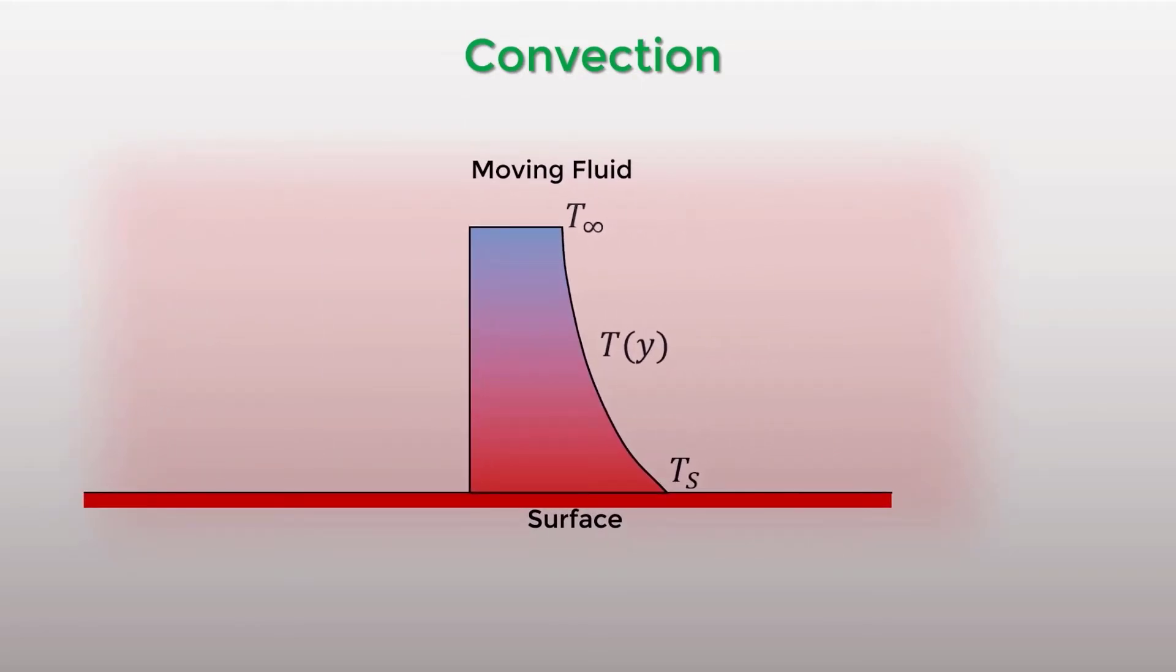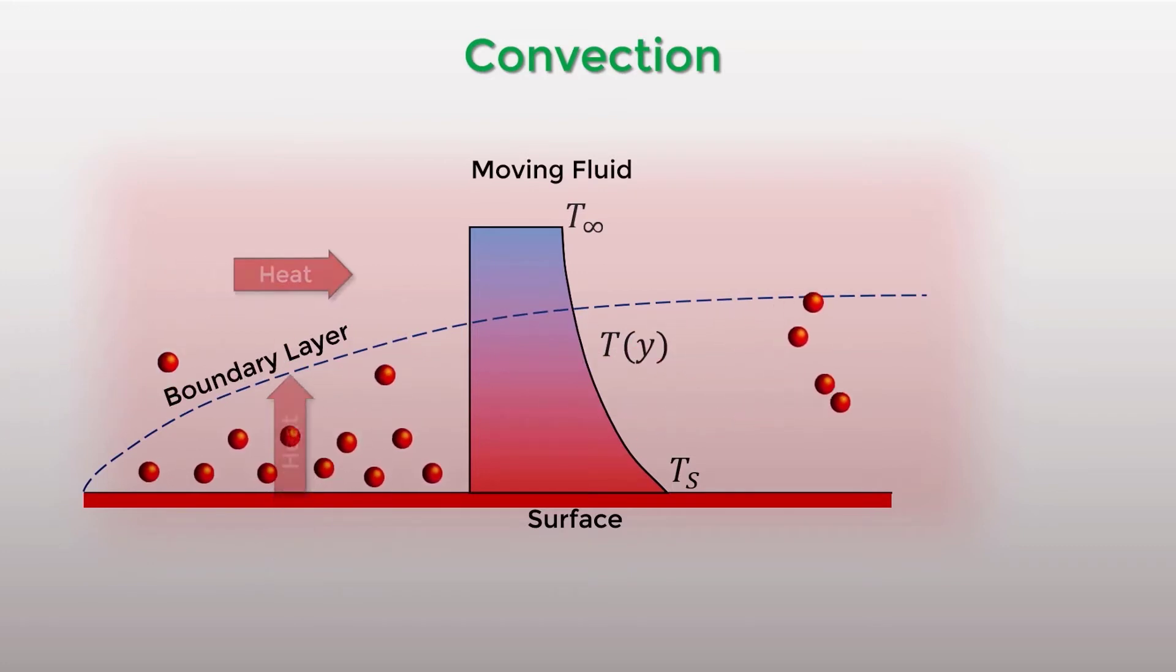Within the boundary layer, convection heat transfer is carried out via both random molecular motion and the bulk motion of the fluid. The contribution due to the random molecular motion dominates near the surface, where the fluid velocity is low. Due to the no slip condition at the surface, the fluid velocity is zero and heat is transferred via diffusion only. The contribution due to the bulk motion comes from the fact that the boundary layer grows as the flow progresses in the x direction.